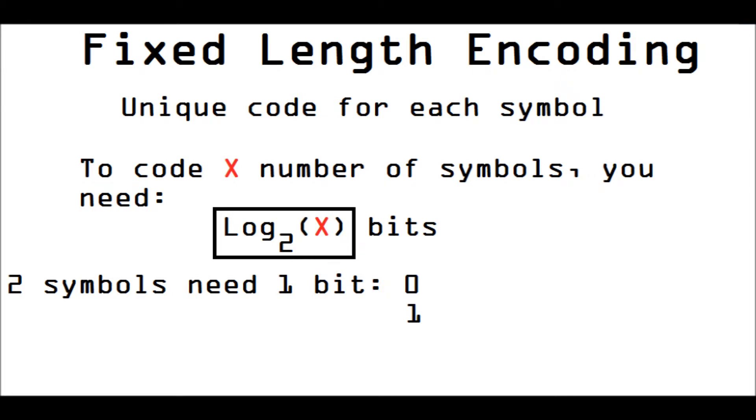So for two symbols, you need one bit. For four symbols, you need two bits. And for five symbols, you need three bits.